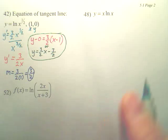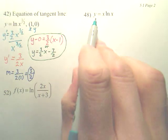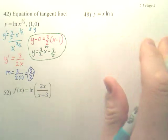So, number 42. 48. Sorry, that was 42. 48. I want to just derive this. That's all they're asking.